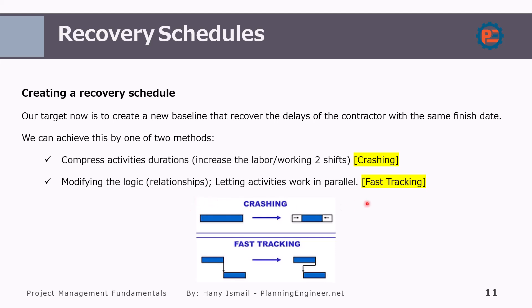Each methodology has its pros and cons. For example, crashing will increase costs because you will have some productivity loss when you compress the duration. You might also have some risk of idle manpower — for example, if you plan to finish the civil work in a shorter period and you have already mobilized the plastering team, they can have some idle days because the civil team didn't finish their work. On the other hand, fast tracking might increase risks because you might be working in the same area on different activities at the same time.